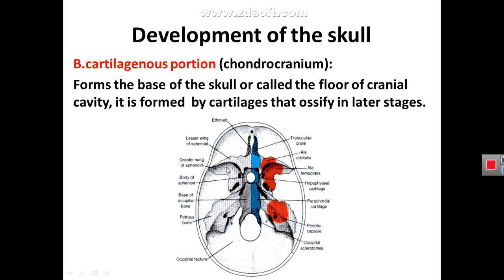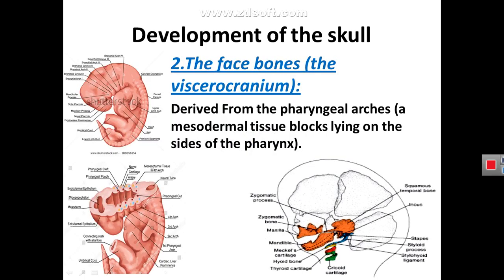This cartilaginous model is sometimes named in references as Trabeculae cranii, Ala orbitalis, Ala temporalis, and others. Although at the undergraduate level these names are not needed to be remembered, you should understand that each piece of cartilage will ossify to form one of the separate skull bones. We have now finished description of the brain box development: the neurocranium consists of the cranial vault and the base, with the second part being the bones of the face.